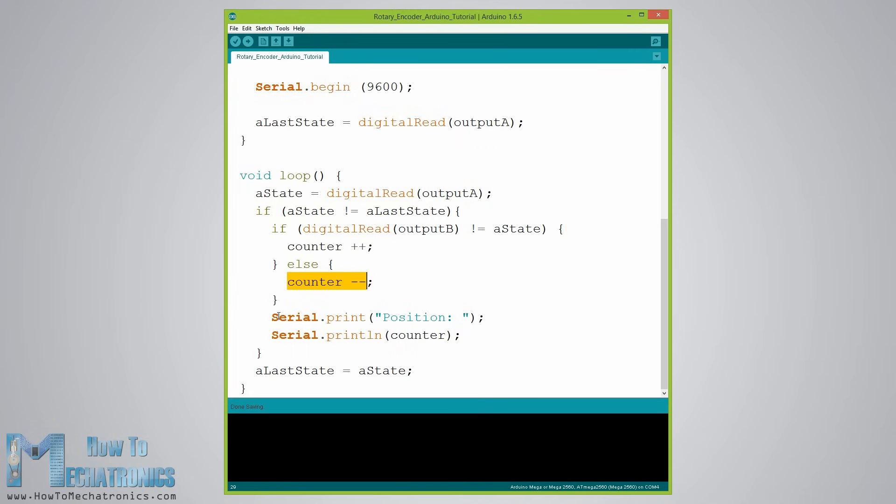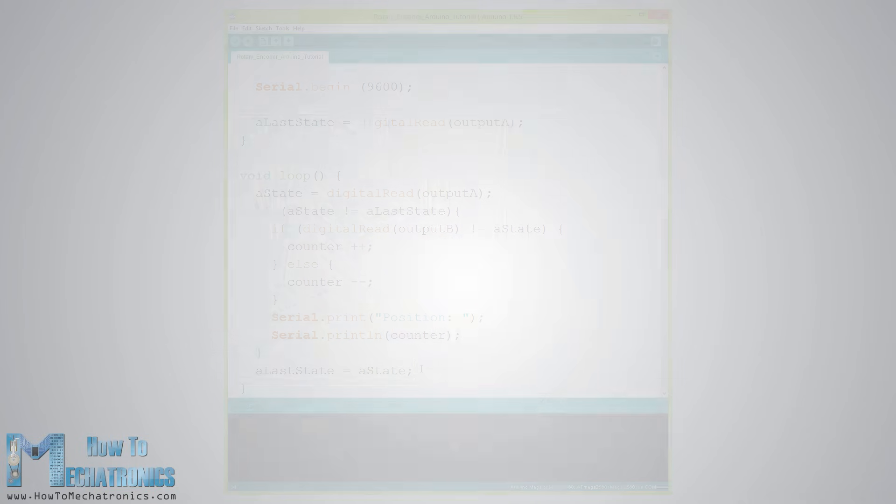At the end, after printing the results on the serial monitor, we need to update the A last state variable with the A state variable. That's all we need for this example and here's its demonstration.